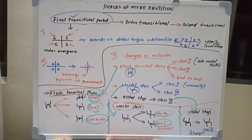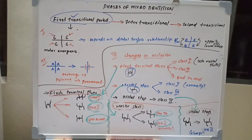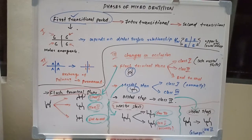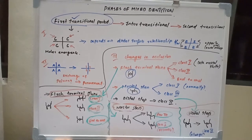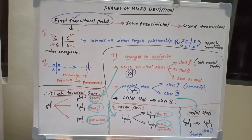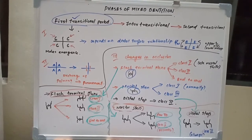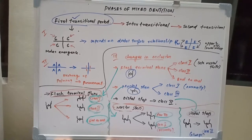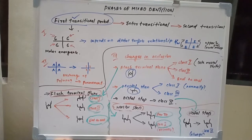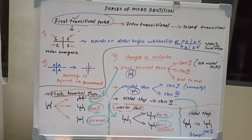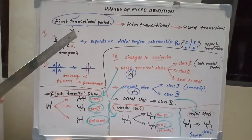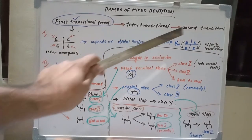Welcome back to a new session on dentistry. Today we have phases of mixed dentition. Mixed dentition is between 6 to 12 years, where the dentition is inclusive of both deciduous and permanent teeth. The mixed dentition period is basically divided into first transitional period, inter-transitional period, and second transitional period.